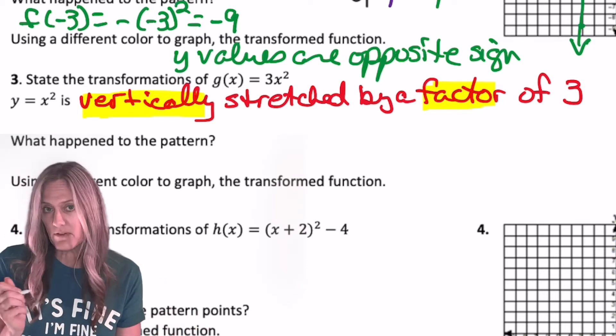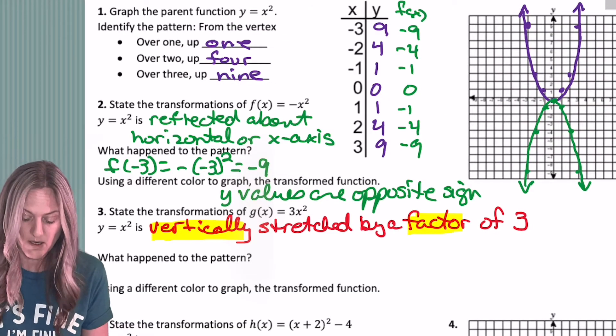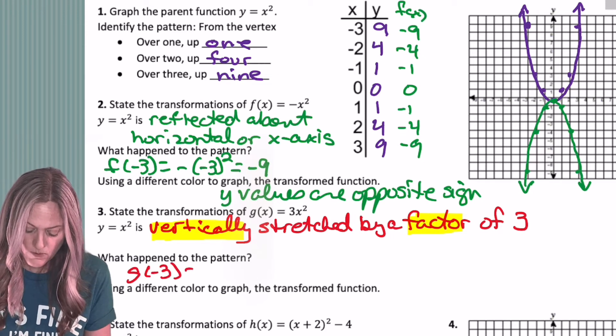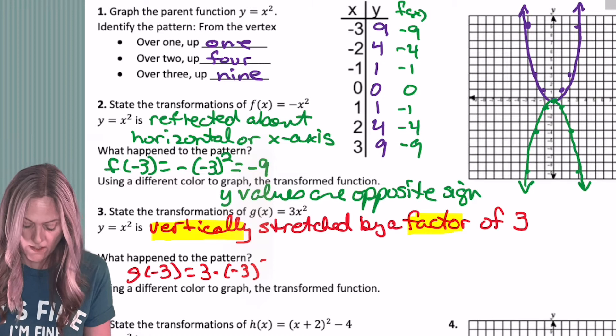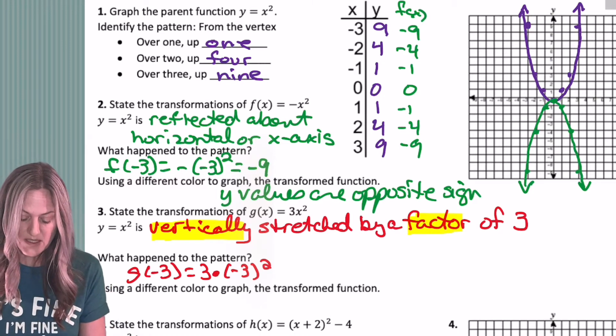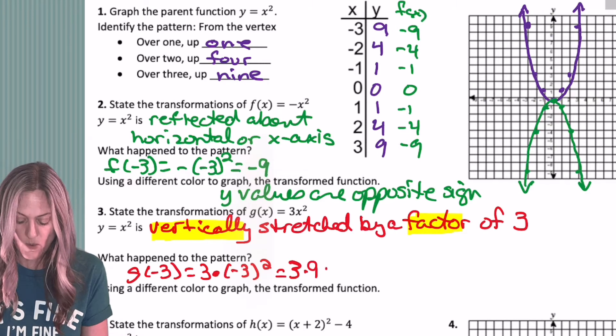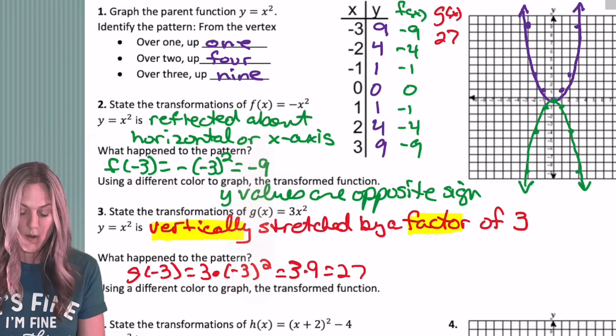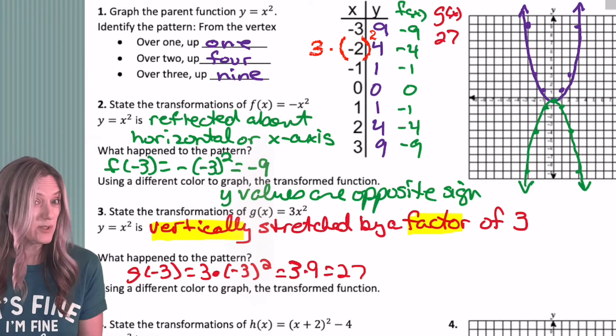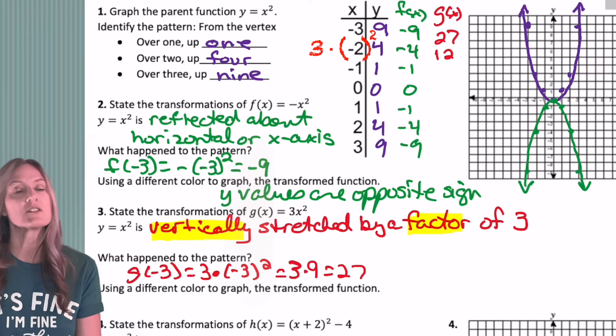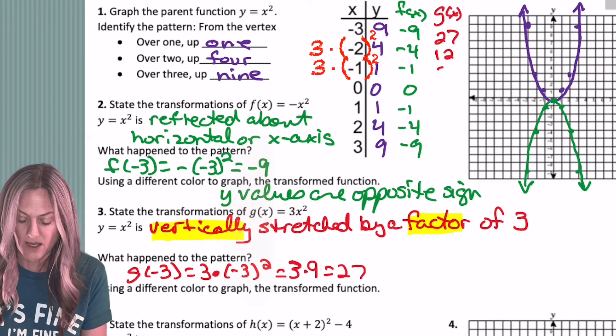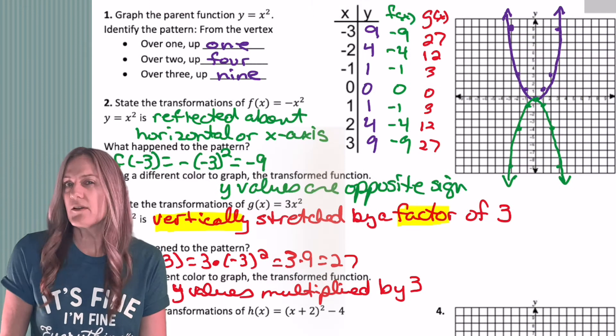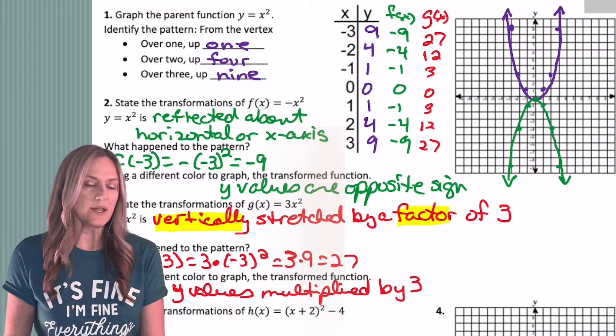Next, what do you think happens to our pattern? Well, if I plug in negative 3 to our g of x function, what would happen? G of negative 3 is 3 times negative 3 squared. 3 times negative 3 squared is going to be 3 times 9 or 27. So now our g of x, the output for g of x, we have 27. What happens with 4? I multiply it by 3 and I get 12. What happens to the 1? I multiply it by 3 and I get 3. And so you can see very easily that that 3 is having what effect? The y values are multiplied by 3.